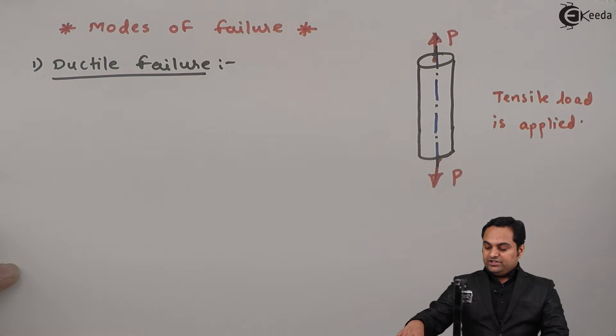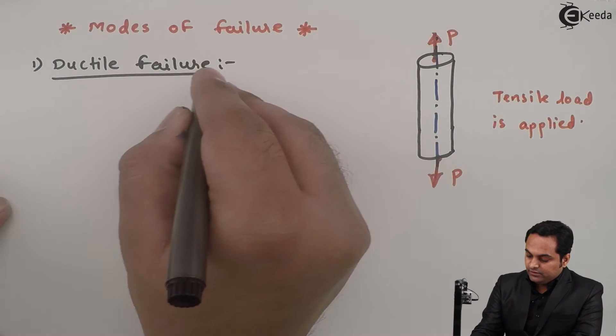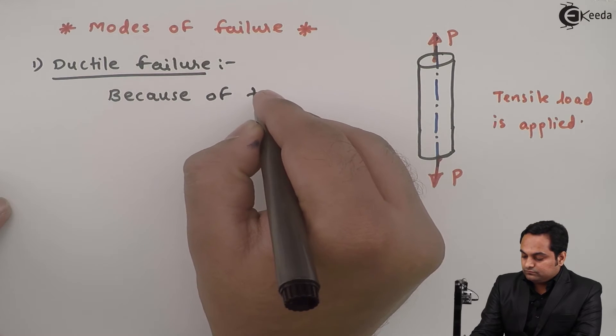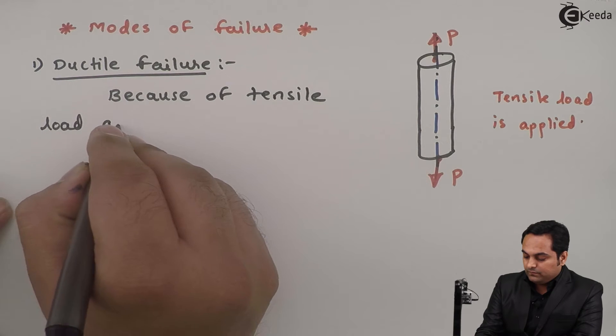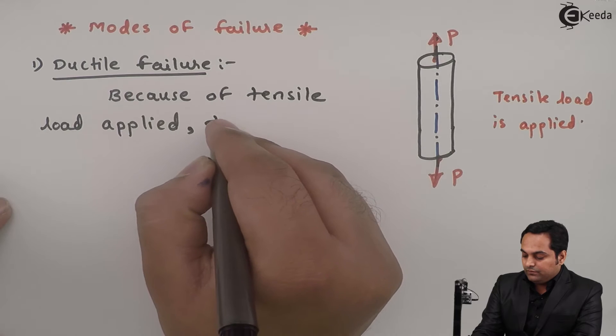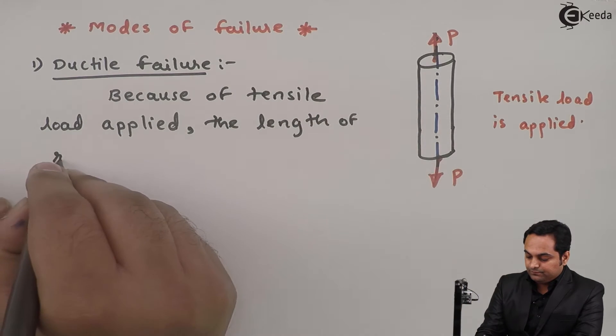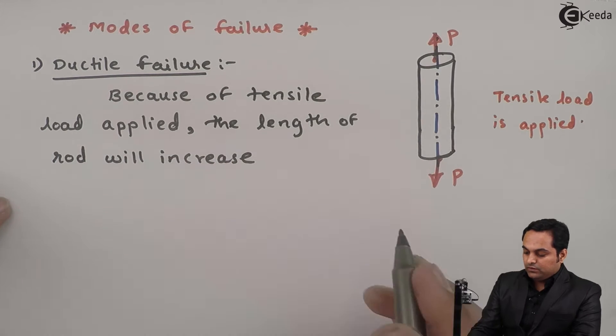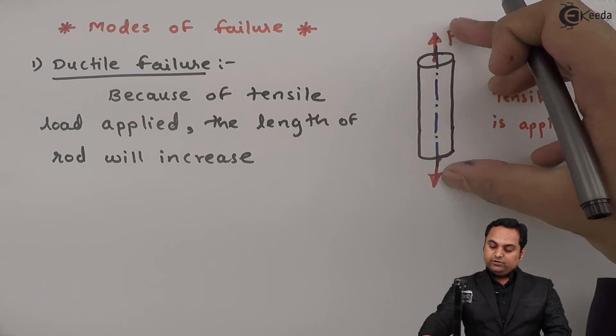Because of tensile load applied, the length of rod will increase. As we can see here, when the load is tensile, the length of this rod will increase but the diameter of the rod will decrease.